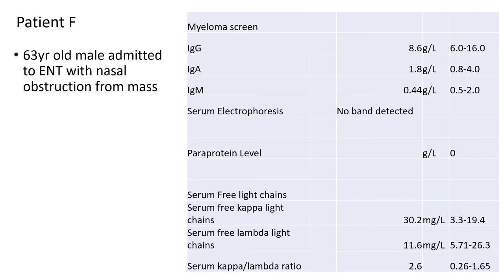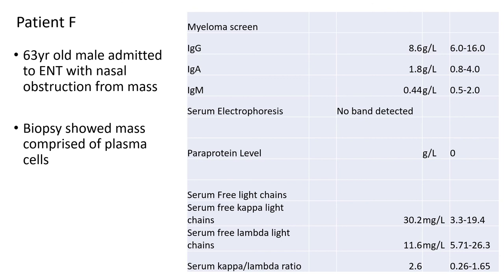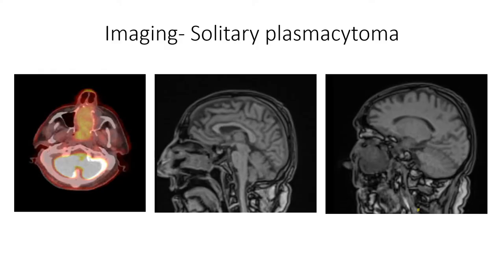Last patient. We have a 63 year old male admitted to ENT with a nasal obstruction from a mass. He's had a biopsy and the biopsy showed plasma cells, which was not expected. We can see why it wasn't expected when we look at the myeloma screen — it's pretty normal. On his PET scan, the area lit up towards his nose shouldn't be there — that's where the mass is. The MRI scans show a big lump of plasma cells in the nasal cavity. The rest of the scans were normal. So this would be a solitary plasmacytoma.